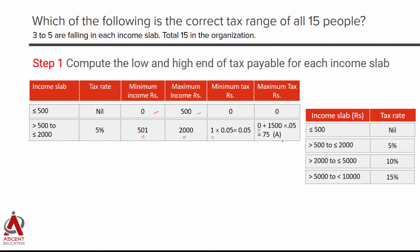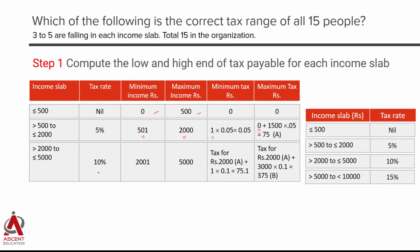Slab 3: income greater than 2000 and up to 5000, with 10% incremental tax. Minimum income is 2001: tax on first 2000 is 75 rupees (call it A), plus 10% on 1 rupee = 10 paise, so minimum tax = 75.10 rupees. Maximum income is 5000: tax is still 75 for the first 2000, plus 10% on 3000 = 300, giving a total of 375 rupees (call it B).